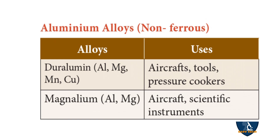Moving on to aluminium alloys, which are non-ferrous: Duralumin is made of aluminium, magnesium, manganese, and copper, and is used in making aircraft, tools, and pressure cookers. Magnalum is made of aluminium and magnesium, and is used for aircraft and scientific instruments.